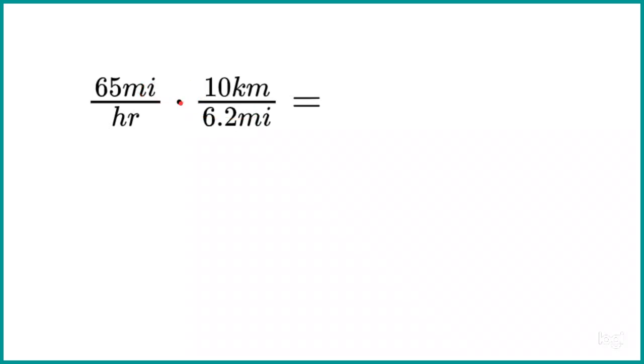Now, once we do that and we multiply those, so this little dot here in the middle is the multiplication sign, just shorthand notation. That means 65 times 10 divided by 6.2. And look what happens. Because we have miles in the numerator over here and miles in the denominator over here, they cancel out. So we're going to be left with units of kilometers per hour.